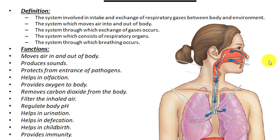The fourth definition: the system which consists of respiratory organs is called the respiratory system. The respiratory organs are the nose, the nasal cavity, the pharynx, the larynx, the trachea, bronchi, lungs, and alveoli. All of these are the organs of the respiratory system. We have brought many definitions to have a clear concept of what the respiratory system does.